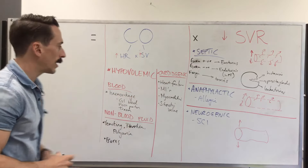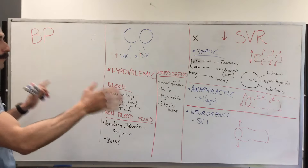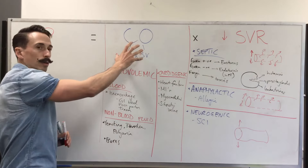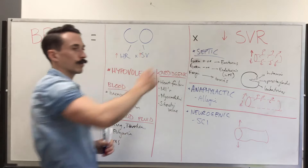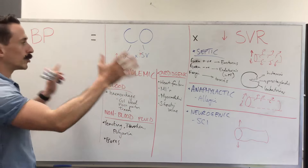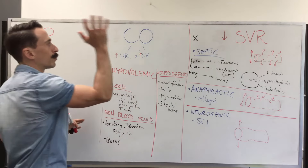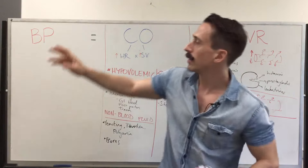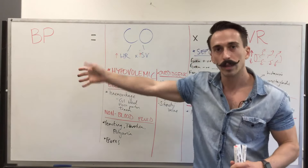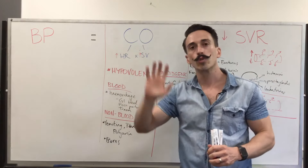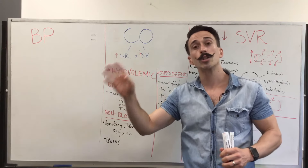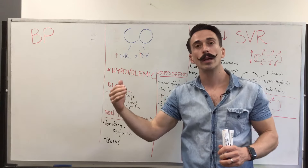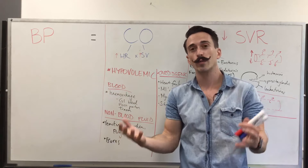So what you see is different types of shock — some sitting under cardiac output, some under systemic vascular resistance. Ultimately, in all types of shock, whether it's affecting cardiac output or systemic vascular resistance, the outcome is the blood pressure drops. Drop in blood pressure leads to drop in tissue perfusion, less oxygen, less nutrients, and over time that tissue can die. And this is a quick run-through of shock.